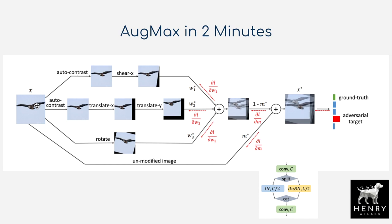To begin the Augmax algorithm, you start with an original image or data point x. You sample three different augmented views by sampling from the RandAugment n and m parameters. The n parameter determines how many augmentations to apply sequentially — say n equals 2, applying auto-contrast then shear x, or translate x and translate y.